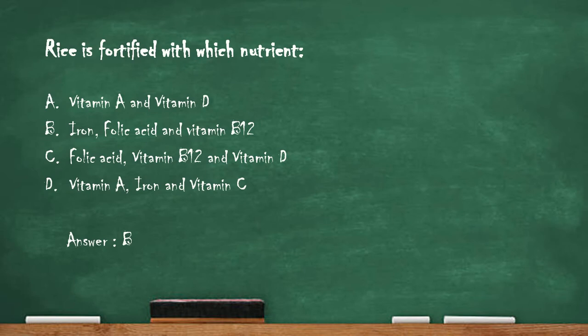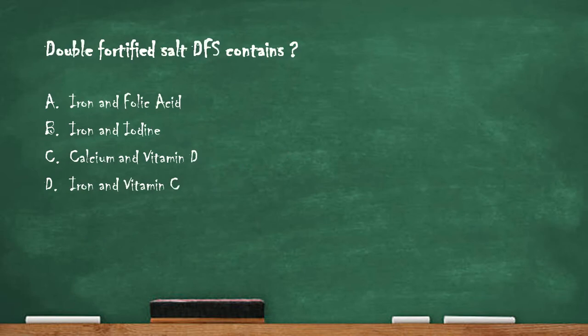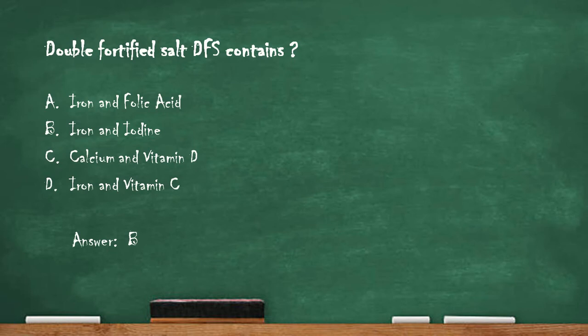Next question: double fortified salt (DFS) contains — option A: iron and folic acid. Option B: iron and iodine. Option C: calcium and vitamin D. Option D: iron and vitamin C. The right answer is option B — iron and iodine. Double fortified salt is mainly fortified with iron and iodine to prevent iron deficiency, which is the main cause of anemia.